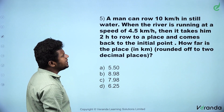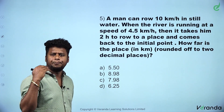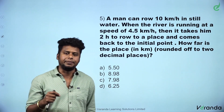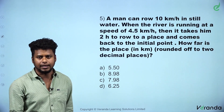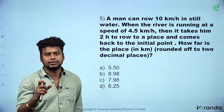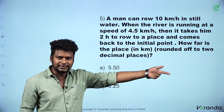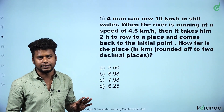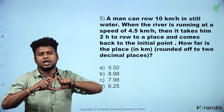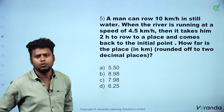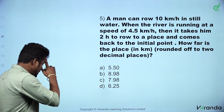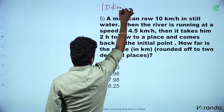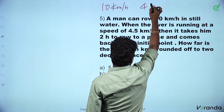A man can row at 10 km per hour in still water. When the river is running at a speed of 4.5 km per hour, that is the stream speed. It takes him 2 hours to go to a place and come back to the initial point. How far is the place in km, rounded to 2 decimal places? The boat speed is 10 km per hour. The stream speed is 4.5 km.